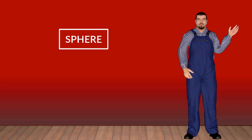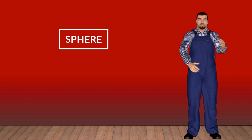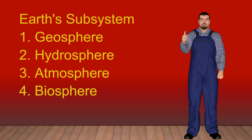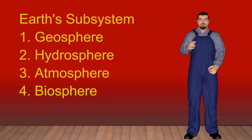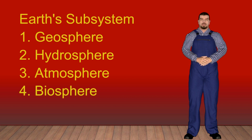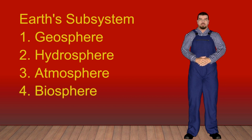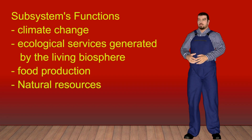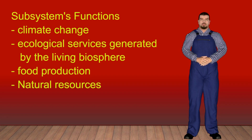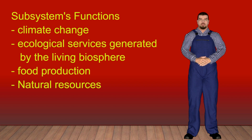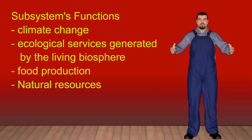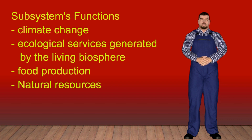The biophysical components of the Earth System are often referred to as spheres and are subdivided into four. Here are the four subsystems of our planet Earth: number one, the geosphere; two, hydrosphere; three, atmosphere; and four, the biosphere. These four regulate different functions on Earth such as climate change, ecological services generated by the living biosphere including food production, and natural resources like fossil fuels and minerals.